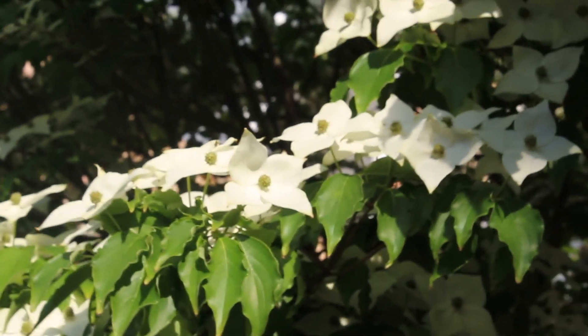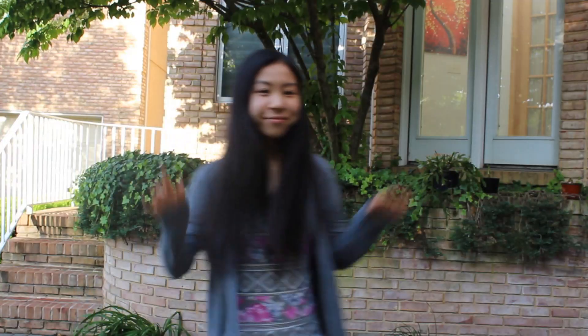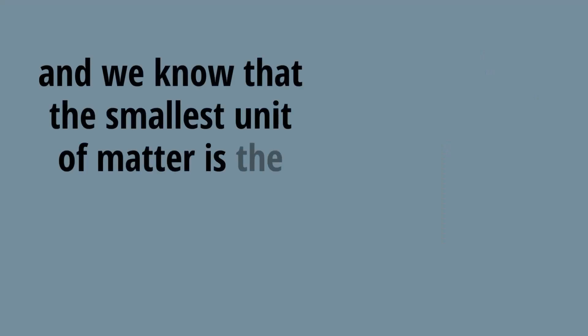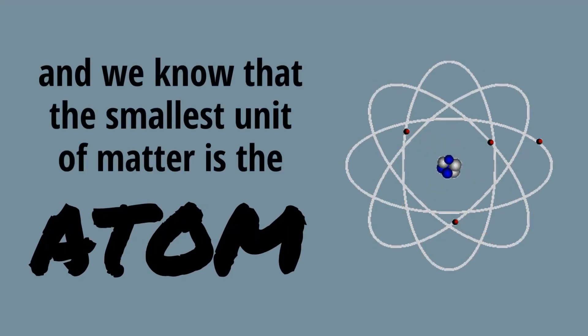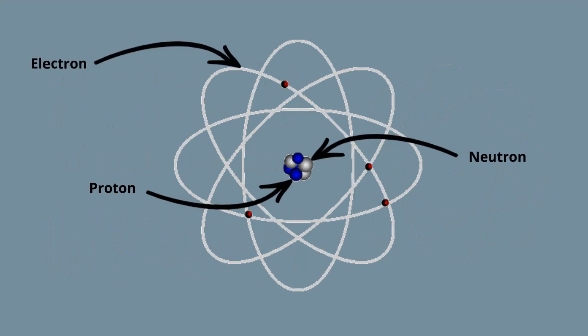We know that everything in the universe is made of matter — this house, that tree, me, and also you. We know that the smallest unit of matter is the atom. Atoms are made of subatomic particles like protons, neutrons, and electrons, and that's the smallest that it goes.